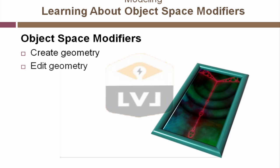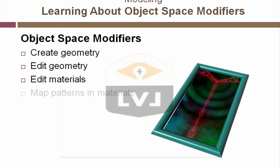Some of the modifiers allow you to simply edit geometry. You will learn how applying a bend modifier can be used to edit the shape of a 3D object. There are some modifiers that can allow you to perform certain editing on materials. Particularly, there is a modifier that allows you to set the material ID of an object, and others help in adjusting map patterns within materials.